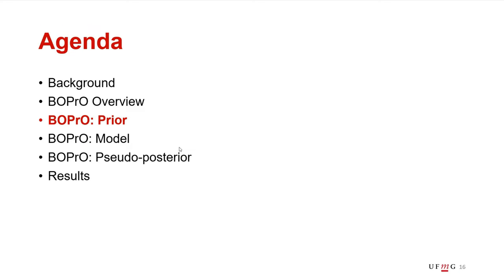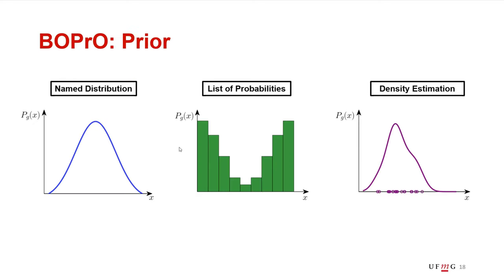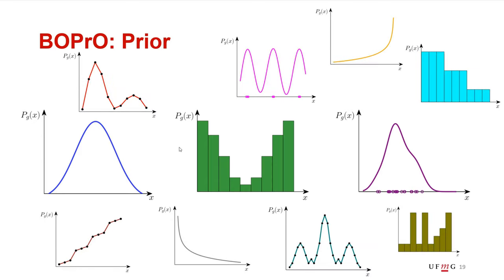Let's take a look at BOPrO in more detail, starting with the prior. As I said, BOPrO allows experts to inject prior knowledge into the optimization in the form of a probability distribution and then uses this probability distribution to guide the search. An important point here is that BOPrO is very flexible with respect to how these probability distributions are defined and which probability distributions can be used. For example, BOPrO could be used with a named distribution like a Gaussian or a beta, or a list of probabilities that give probabilities of different points in the space being good or the optimum in the case of a continuous or discrete space, or even used with some history of previous points to estimate a probability distribution. In fact, BOPrO can be used virtually with any probability distribution, which means BOPrO is very flexible with respect to which priors can be injected into the optimization process.